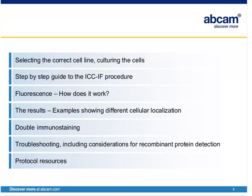Through today's presentation, I'm going to be talking about the following things: selecting the correct cell line and culturing the cells, which is very important to make sure that you have a good sample. We're going to take a step-by-step look at the ICC-IF procedure itself, how fluorescence works, some results showing different cellular localization, considerations for double immunostaining, troubleshooting including considerations for recombinant protein detection. Then I'm going to hand over to my colleague Augustine, who will take you through some of our protocol resources.